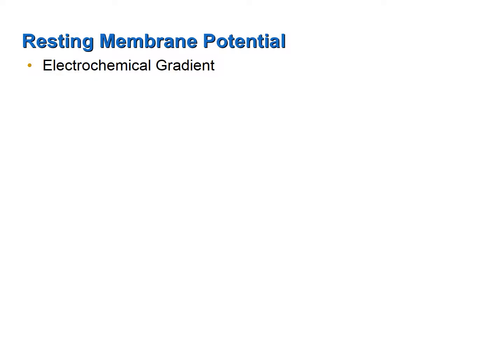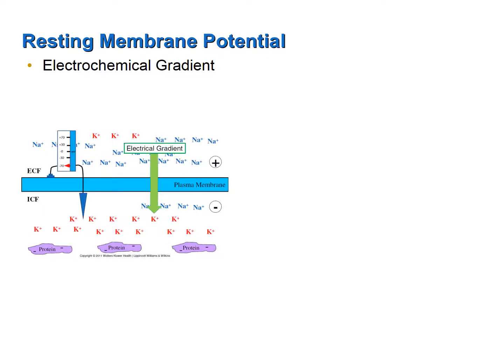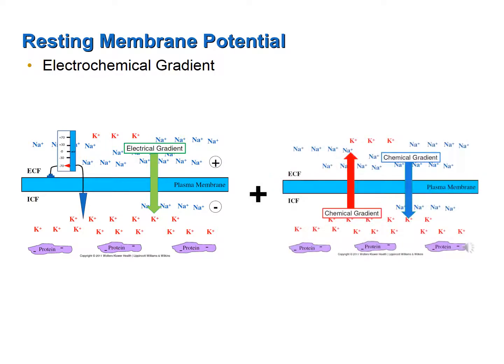In conclusion, the resting membrane potential is an electrochemical gradient. An electrical gradient exists that creates a force that has the potential of moving positively charged particles from the extracellular fluid to the intracellular fluid. Chemical gradients also exist for potassium and sodium that create forces that have the potential of moving potassium and sodium down their chemical concentration gradients across the plasma membrane.